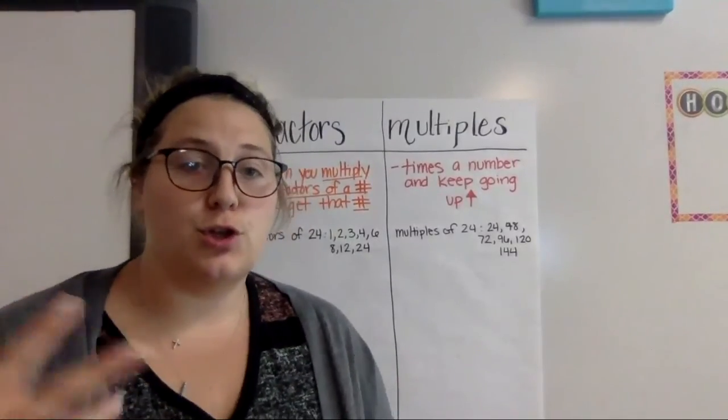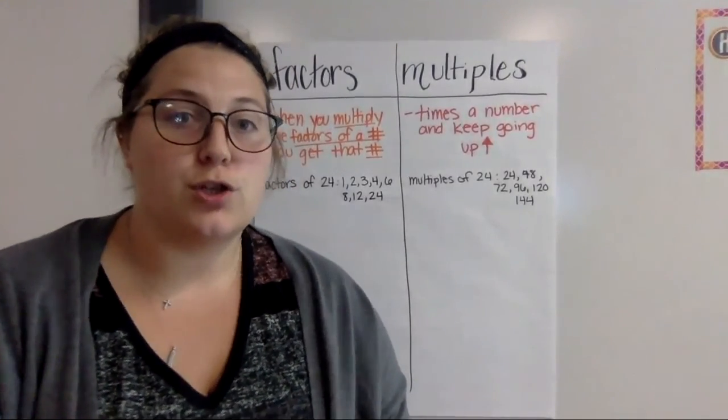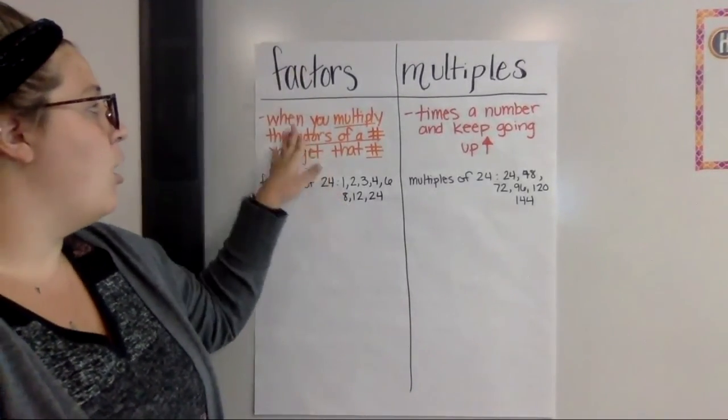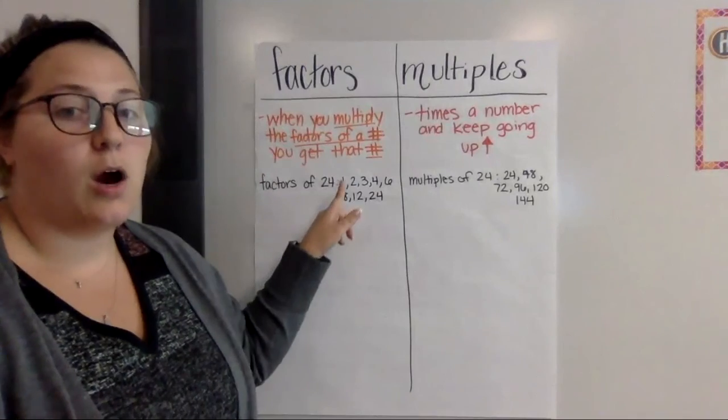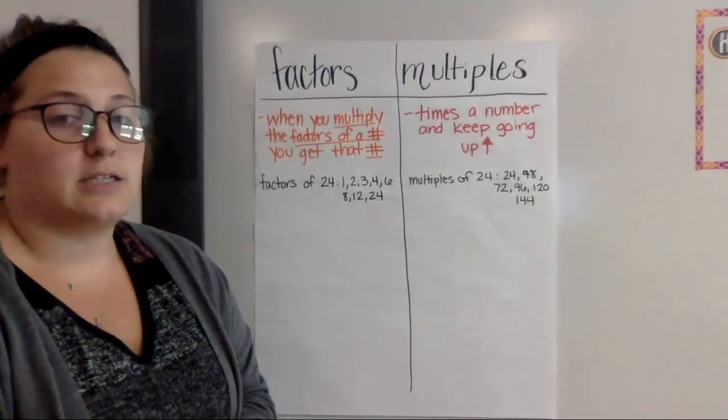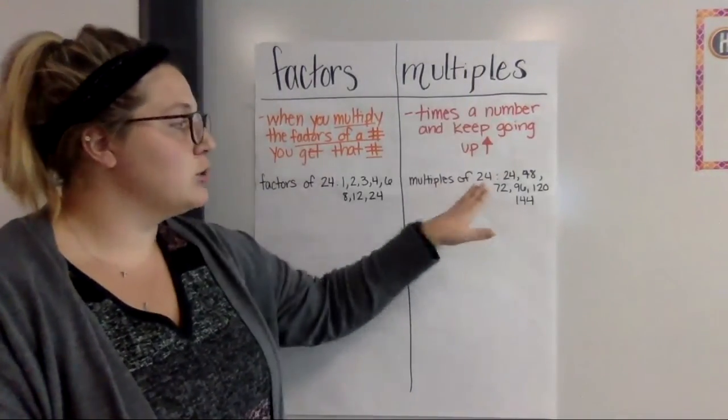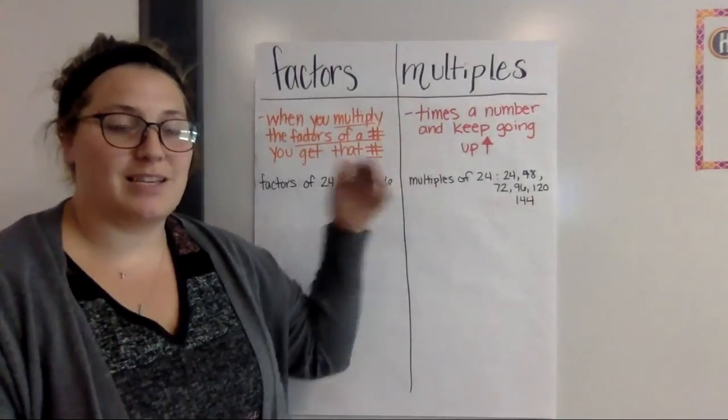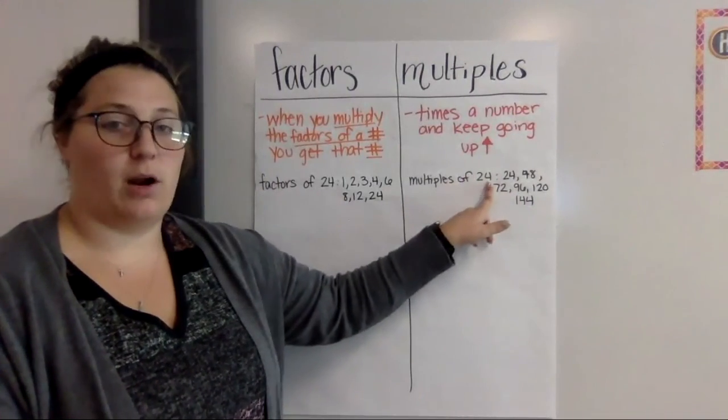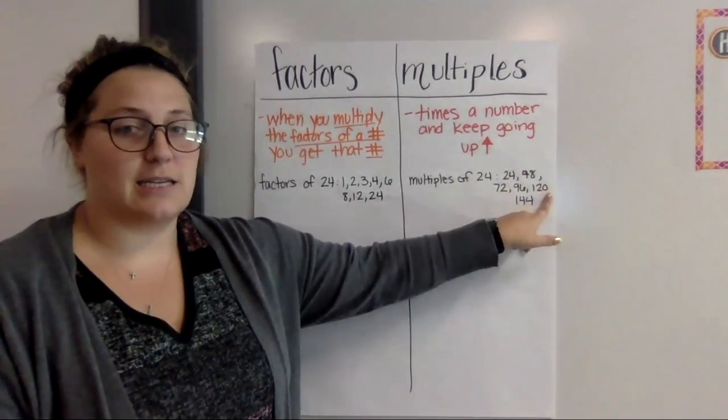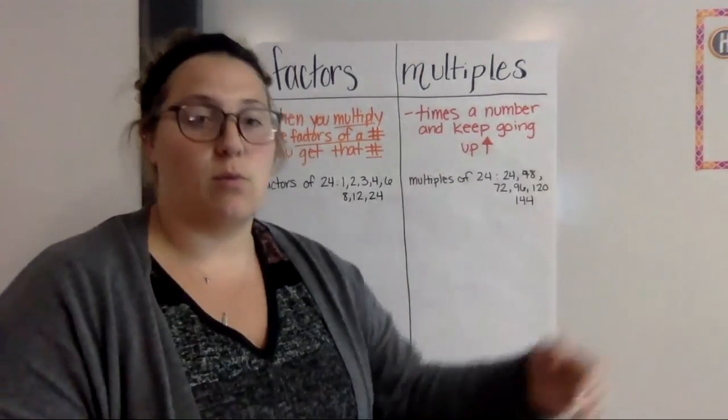So understanding these two terms are going to become extremely important in our next few activities. So the factors, just a reminder, are when you multiply the factors of a number you get that number. So for example factors of 24 are 1, 2, 3, 4, 6, 8, 12, 24. So the numbers that make up when multiplied they make that number. A multiple of a number is going to keep going up because it's when you take the number 24 times each number. So this would actually keep going. So we have multiples of 24: 24, 48, 72, 96, 120, 144, and it could keep going. It's going to keep going. 24 times whatever is another multiple, another multiple.